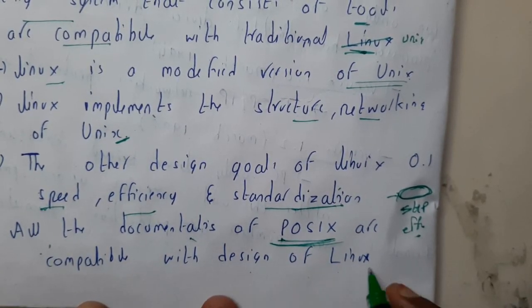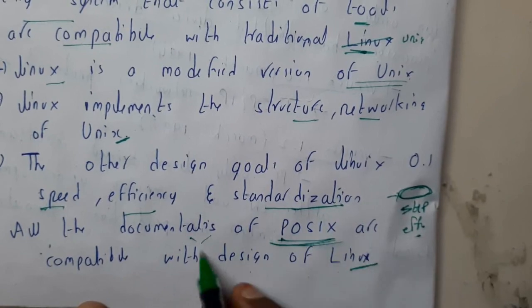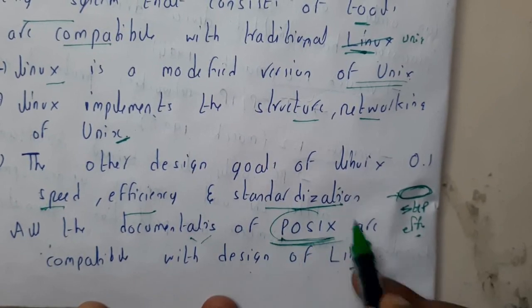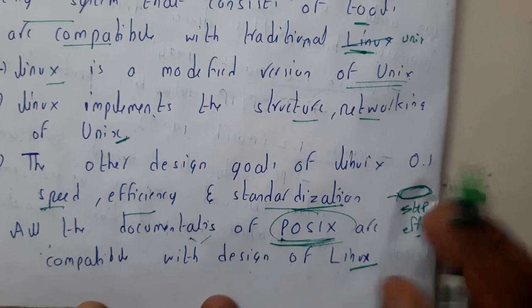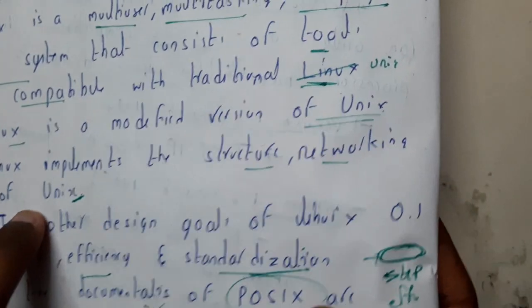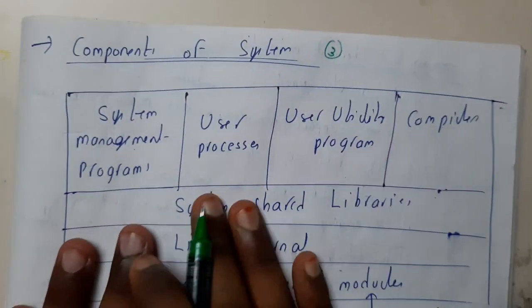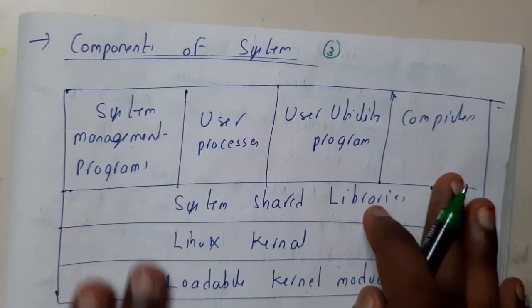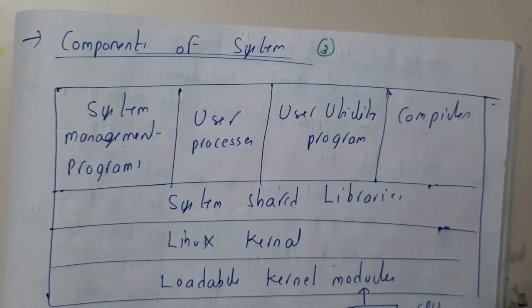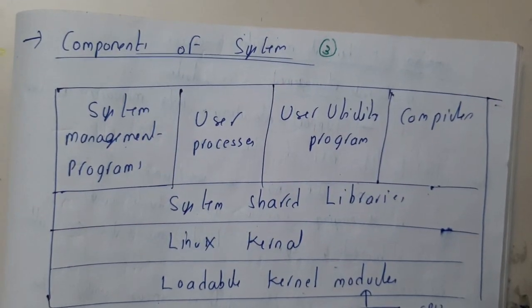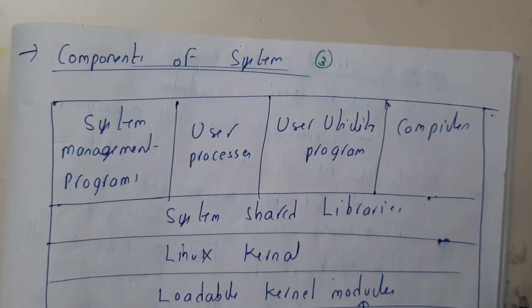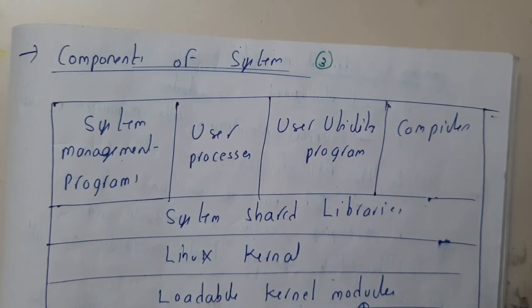All the documentation of POSIX are made compatible with the design of Linux, so these rules are being followed by Linux while designing the system. I hope everyone got a small idea on this. In the next tutorial, we'll be going through the components of the Linux system. Thank you, thanks for watching.